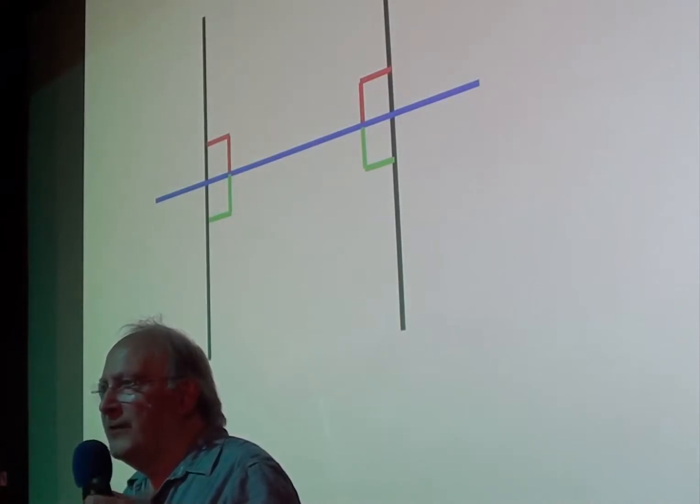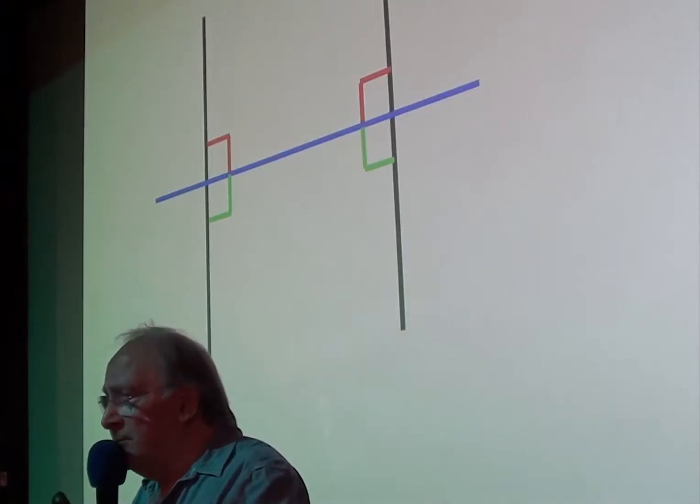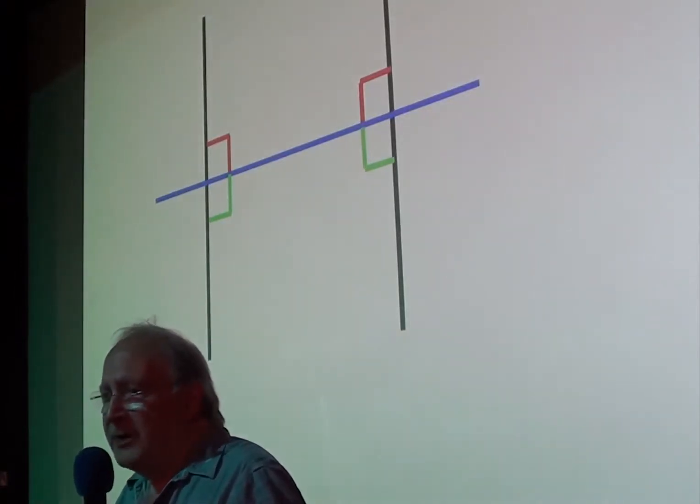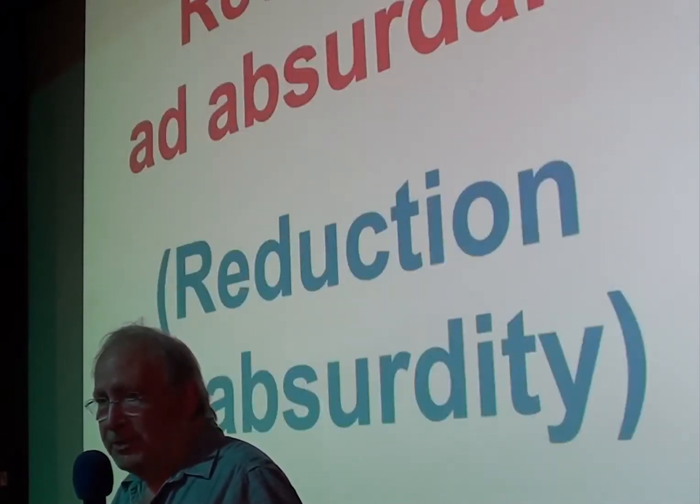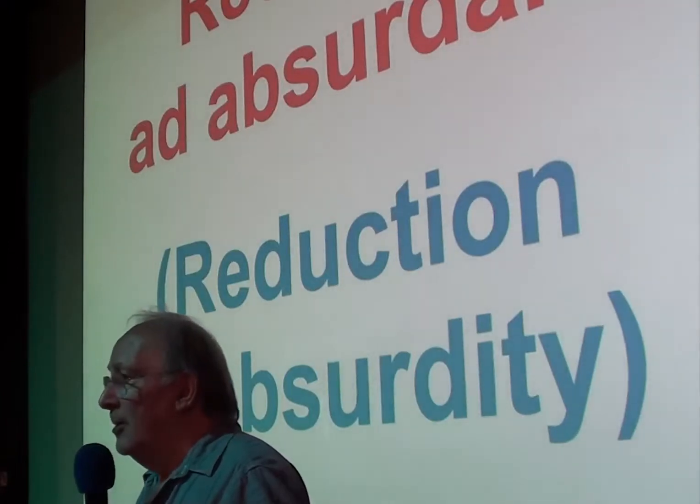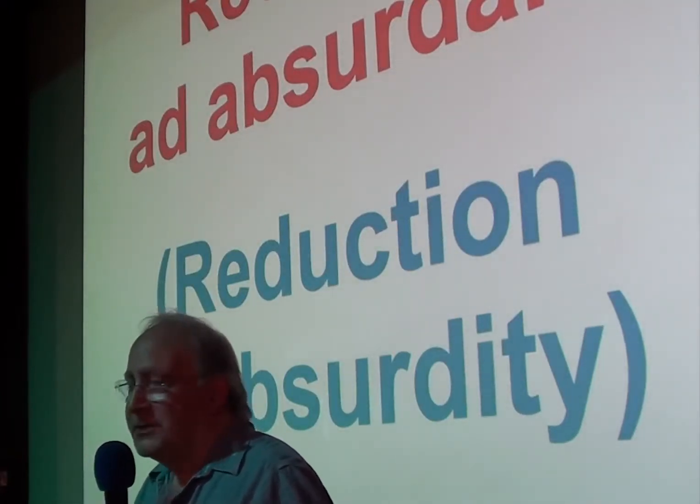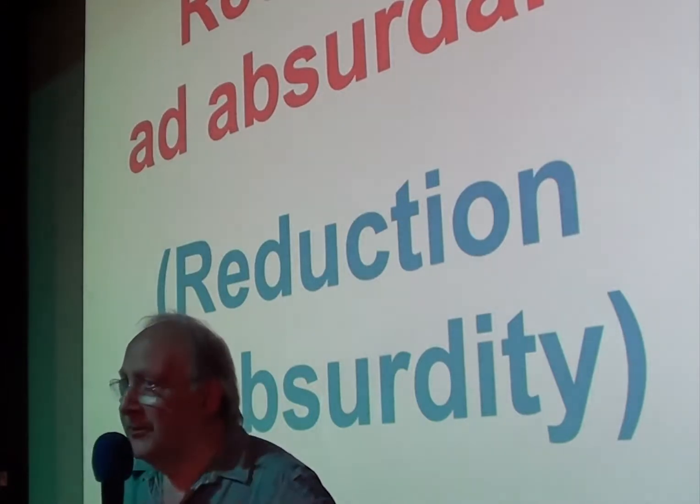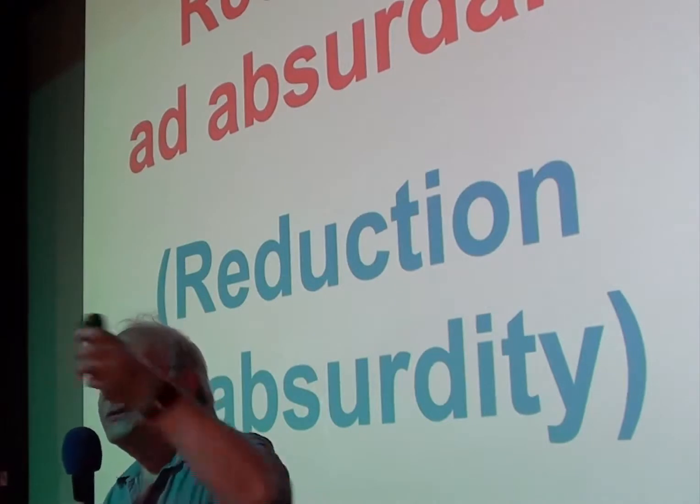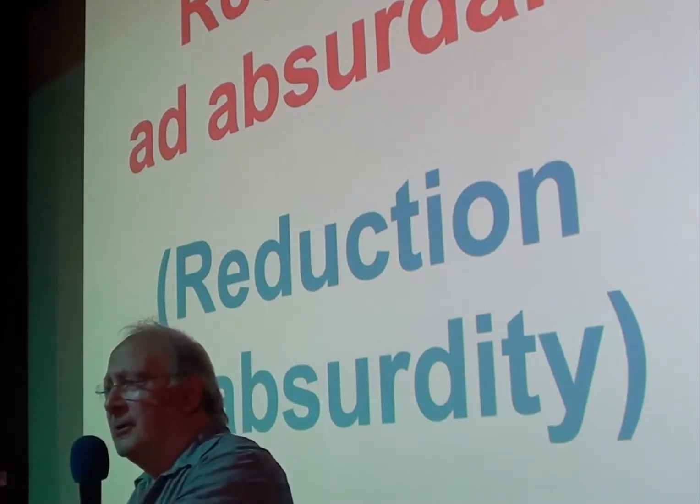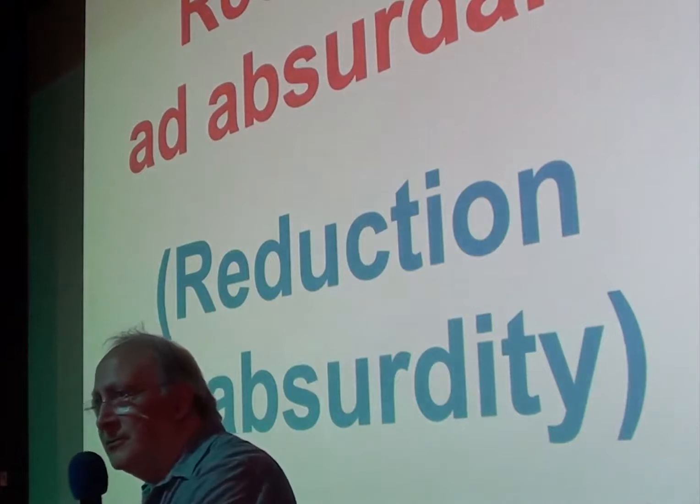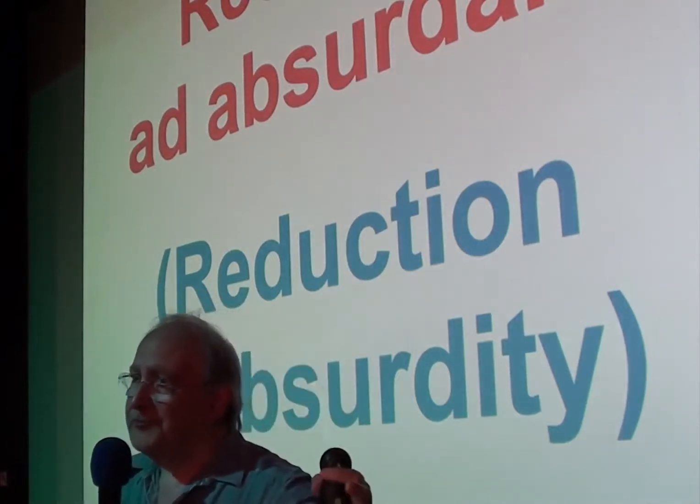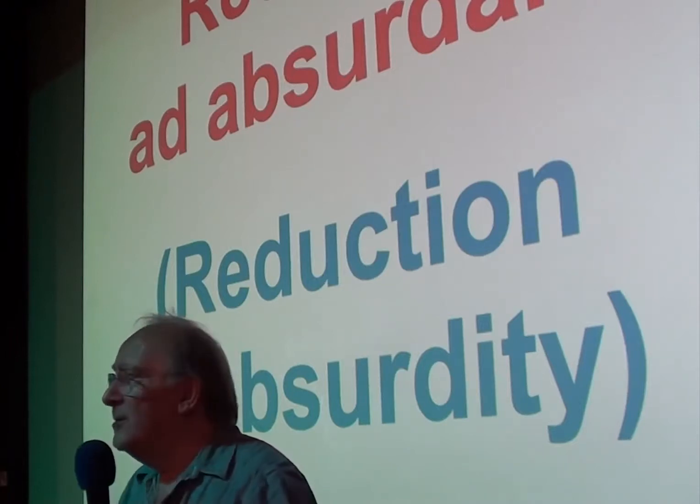So, mathematicians wanted to get rid of that fifth axiom as an axiom. They thought, if they could prove it, if they could prove that it's true, then they don't need to have it as an axiom. And one method they thought they would try and use in logic, in maths, is called reductio ad absurdum. Reduction to absurdity. So, the way this works, if you want to prove something, you assume the opposite, you assume it's not true, show that that leads to a contradiction, thereby you've proved what you did want to prove. So, I want to give you a maths example of this, reductio ad absurdum.